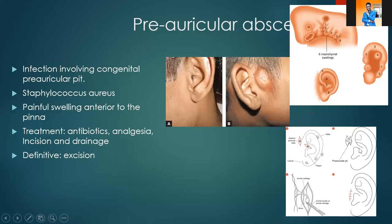However, because it is a pit that contains a sac — as you can see in the image, the pit is connected to a sac that sits onto the cartilage — this sac can get infected and become big. When it becomes big, that is when we have what we call an abscess, because this swelling usually contains pus. Infection involving the congenital preauricular pit is what we call a preauricular infection, usually caused by Staphylococcus aureus.